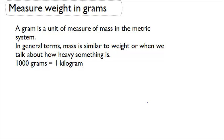Now we're going to start to talk about how we can measure weight in grams. A gram is a unit of measure of mass in the metric system. In general terms, mass is similar to weight, or when we talk about how heavy something is. 1000 grams is equal to 1 kilogram.